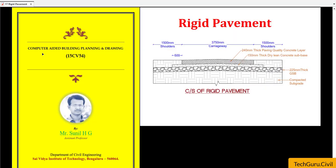Hello friends, welcome to CABPD tutorials. In this class we are going to learn how to draw the rigid pavement in AutoCAD in a very simple manner. This is the cross-section of a rigid pavement — it's a single-lane structure. As per the IRC standards, the carriageway width for a single lane will be 3.75 meters.